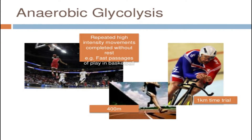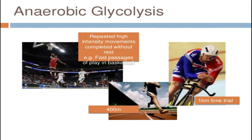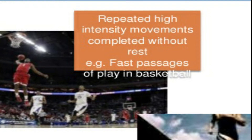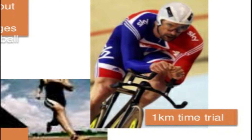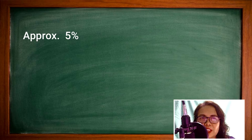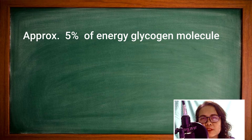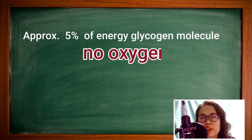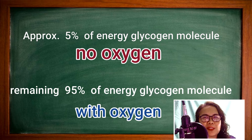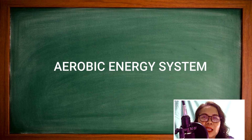Examples of physical activities using anaerobic lactic or glycolytic are repeated high-intensity movements completed without rest, such as fast passages of play in basketball, a 1-kilometer time trial, or a 400-meter run. This system only releases approximately 5% of the energy in a glycogen molecule, as it operates without oxygen. The remaining 95% of energy in a glycogen molecule can only be released in the presence of oxygen, which is the aerobic system.